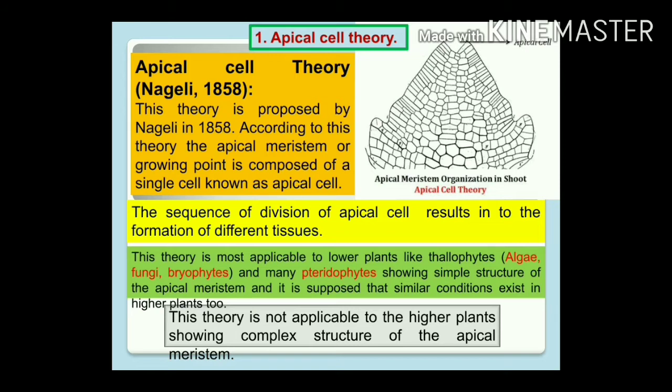Examples include Fucus, Dictyota, and Sargassum. The presence of complex growing apical plants cannot be explained by this theory. Therefore, this theory is not applicable to higher plants due to the complex structure of their apical meristems.